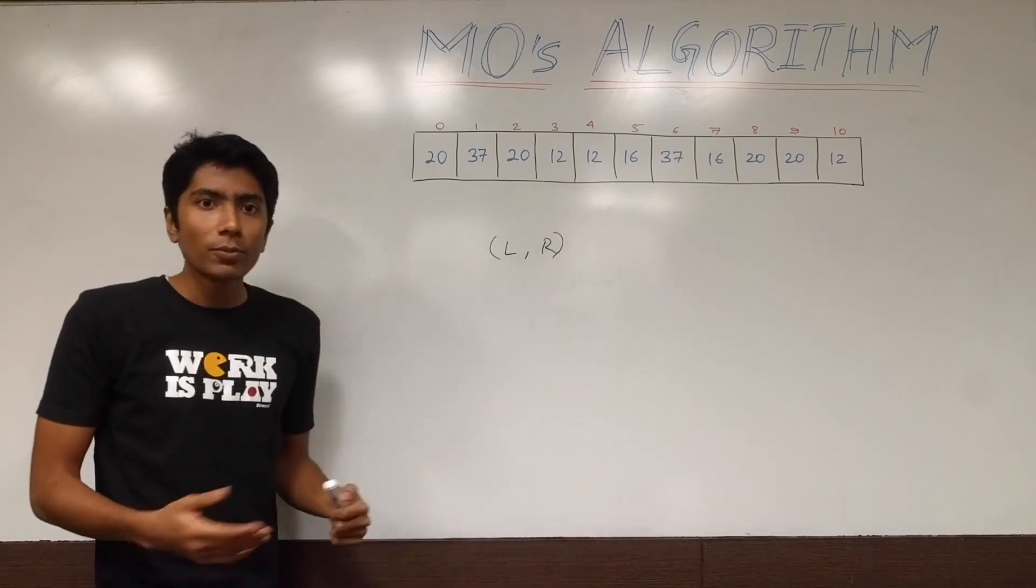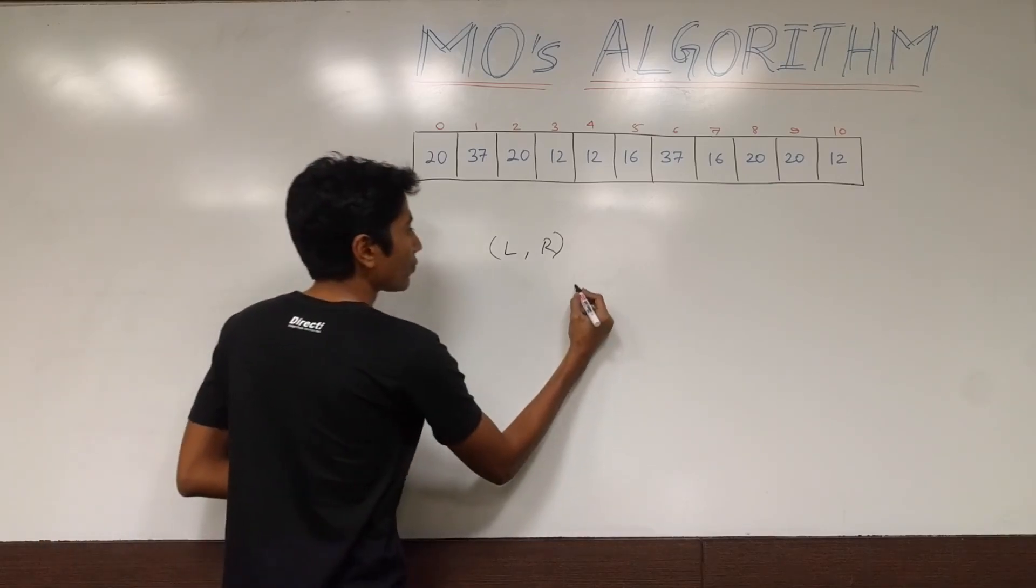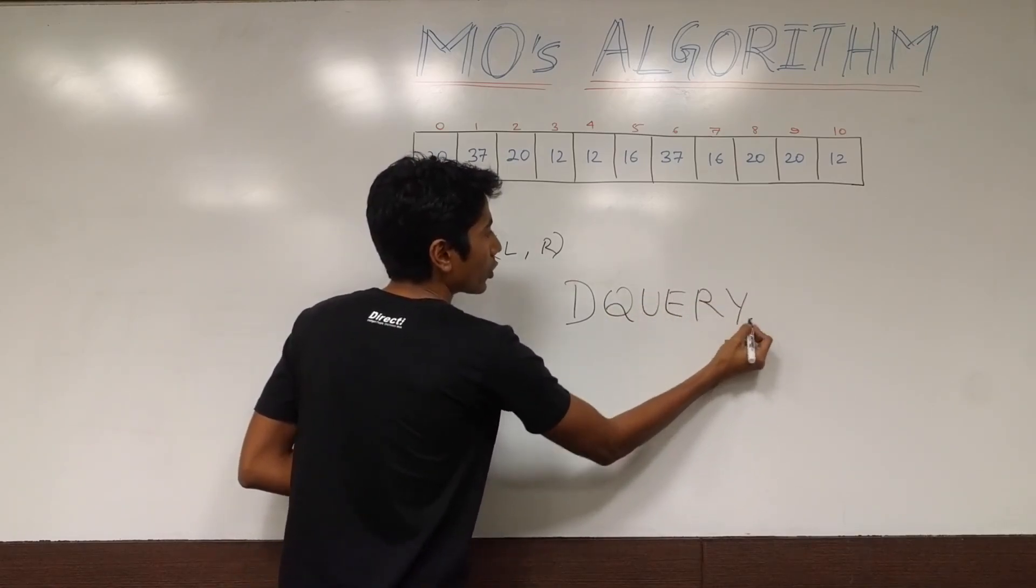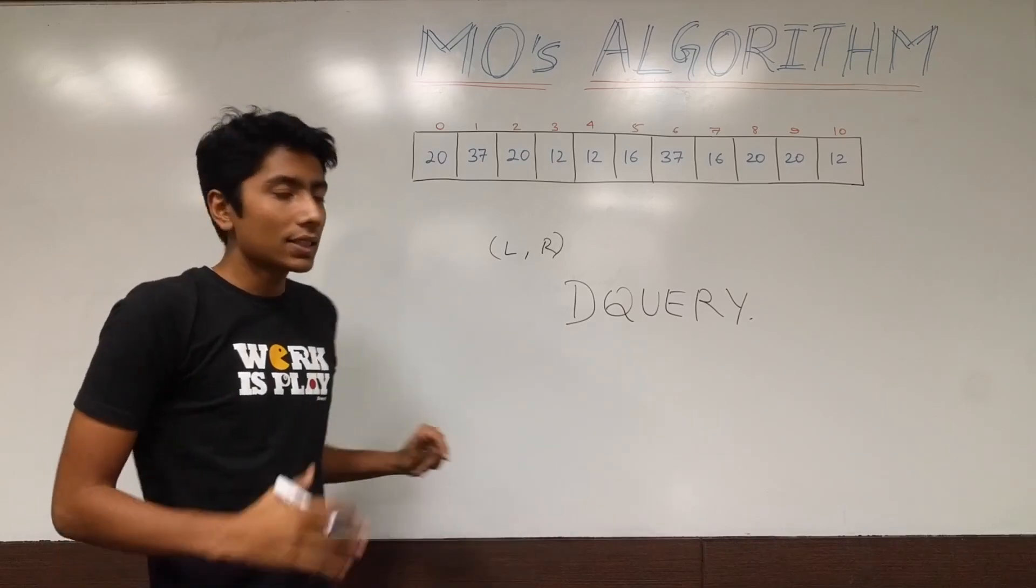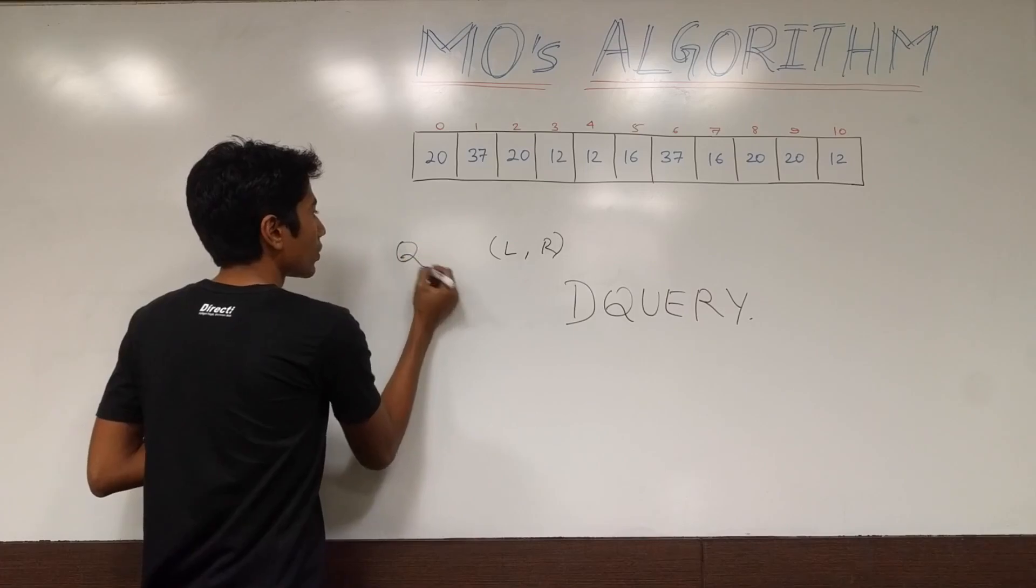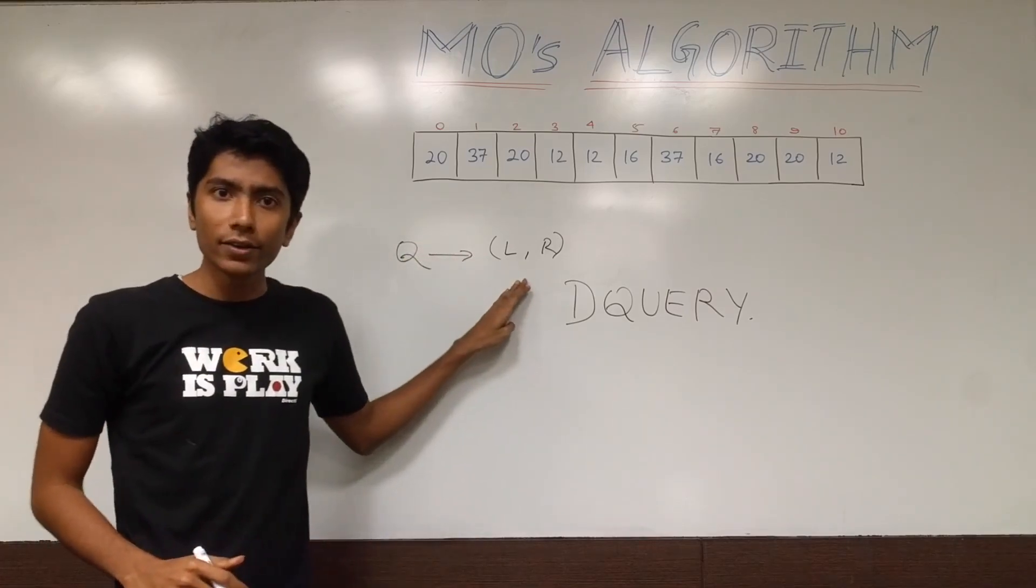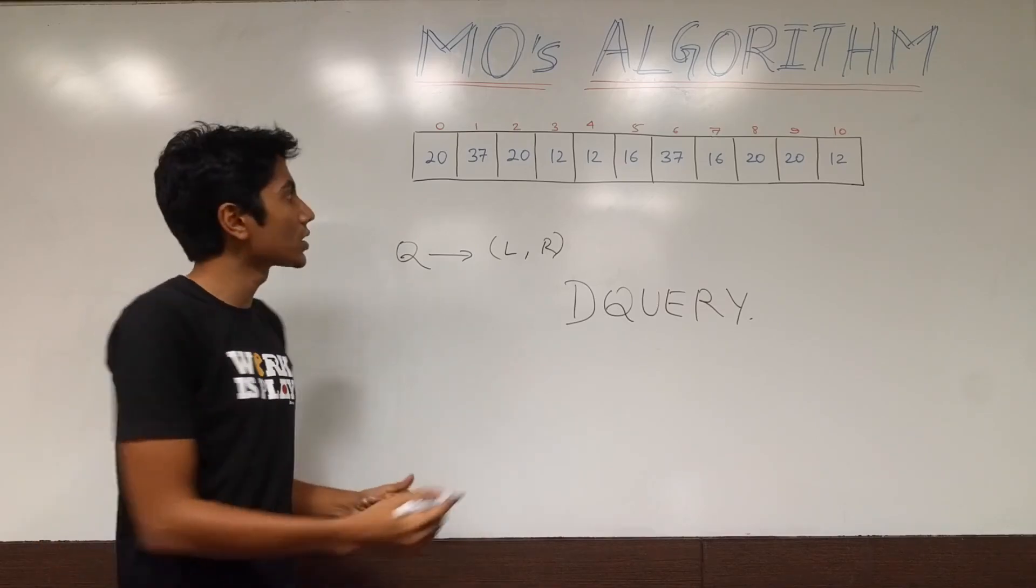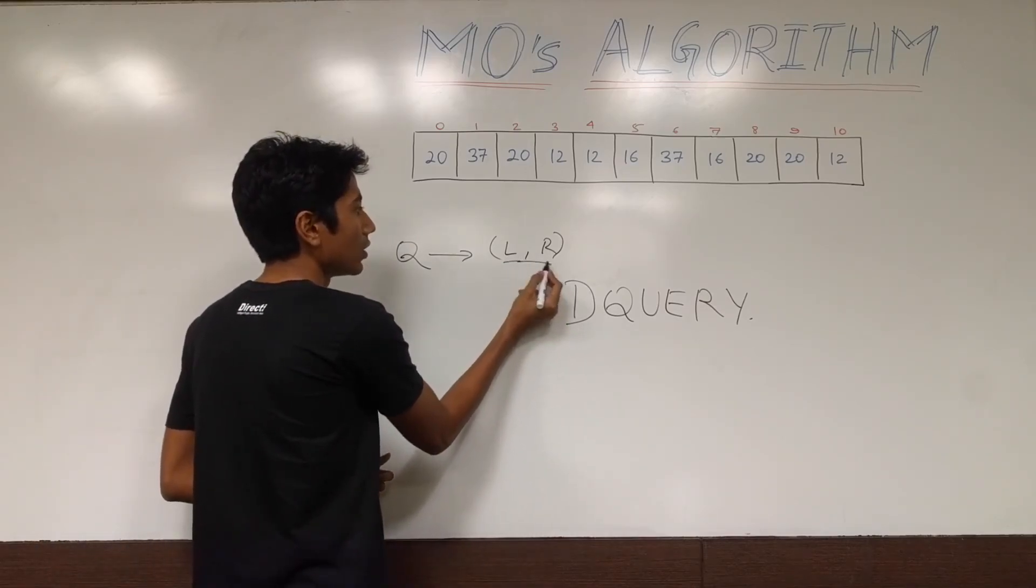So ranges from left to right will be given to us and we have to output something based on the array. For example, there's a SPOJ problem of dquery which we'll be picking up in this tutorial. So dquery says that you have this array and you have q queries of type left to right such that you have to give us all the distinct elements between left and right in this array.